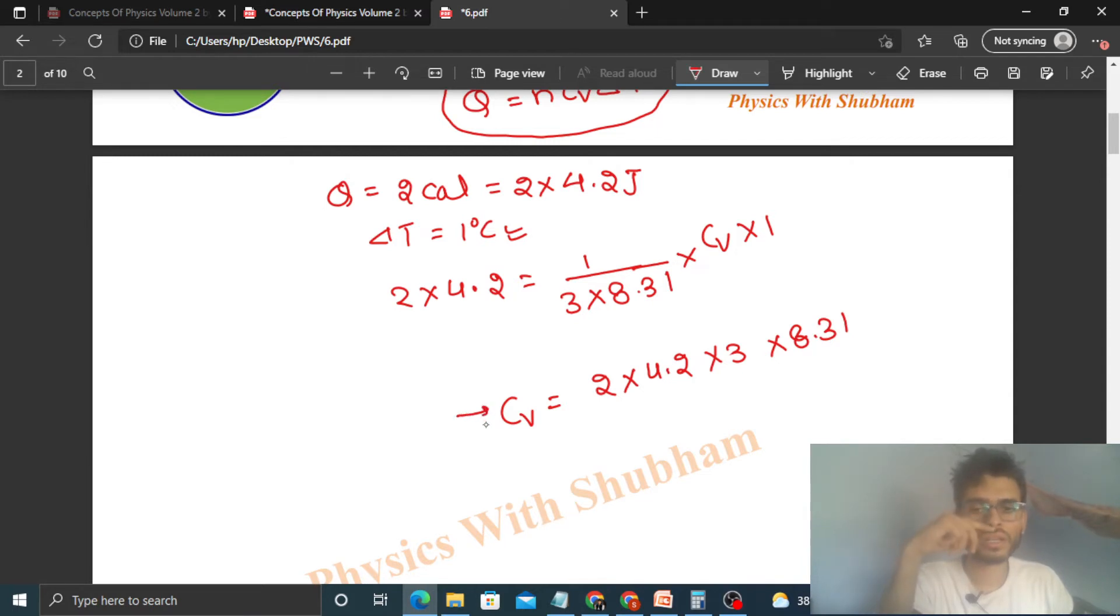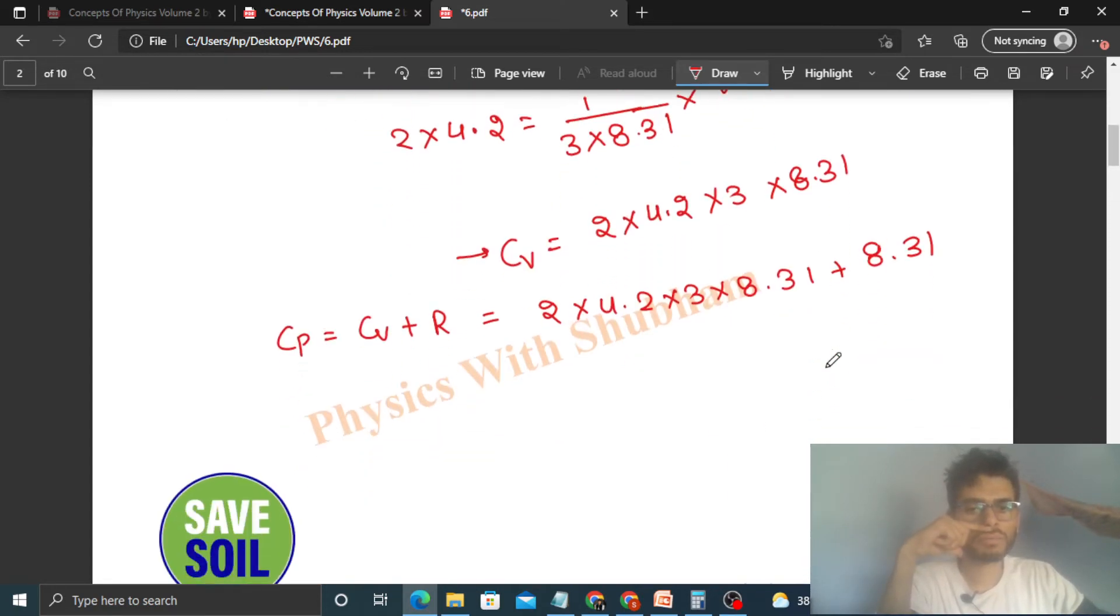Its unit will be Joule per Kelvin. Now can you find out Cp? That will be Cv plus R. So it will be 2 into 4.2 into 3 into 8.31 plus R that is 8.31. So you can find out this value. So 2 into 4.2 into 4.2 plus 4.2 into 3 plus 1. So this value you can find out, this is the value of Cp.